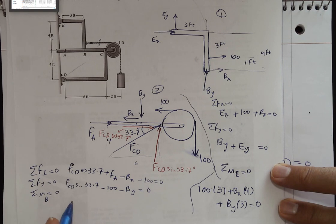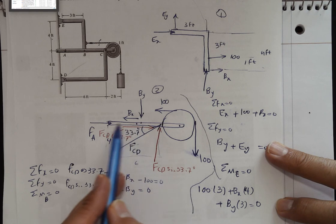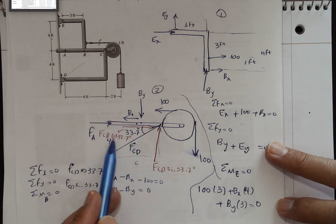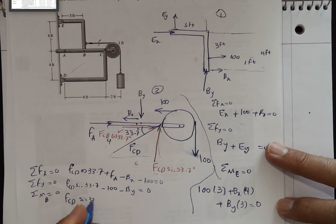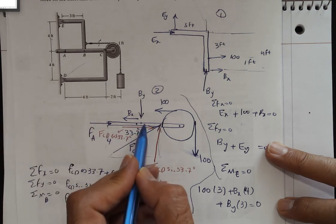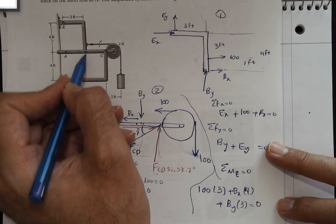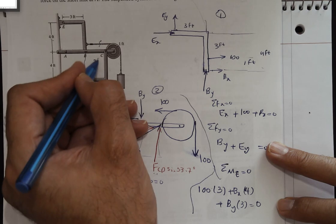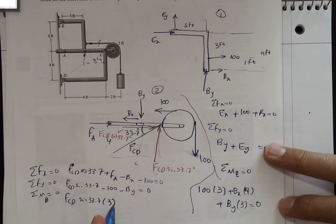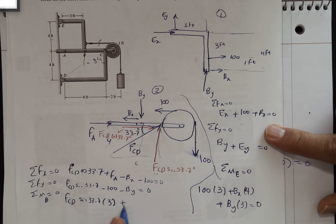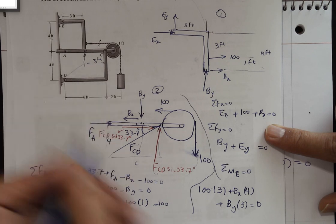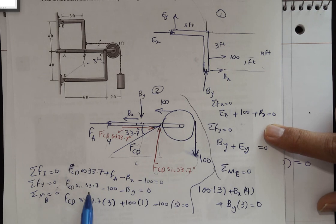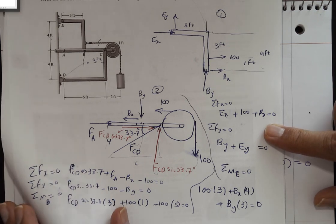Sum of moment about B equals 0. FA passes through B — no moment. FCD cosine 33.7 passes through B — no moment. So I get: FCD sine 33.7 times 3 (counterclockwise) plus 100 times 1 (counterclockwise) minus 100 times 5 (clockwise) equals 0. We now have 6 equations and 6 unknowns, and we can solve them together to find all unknowns.